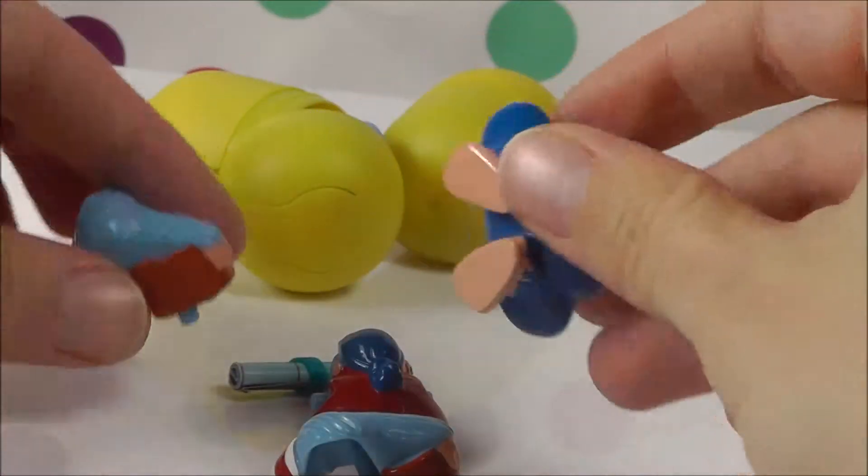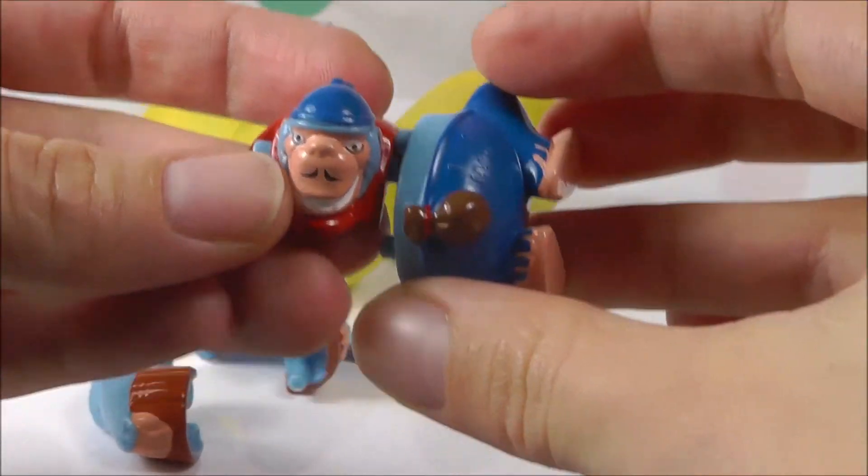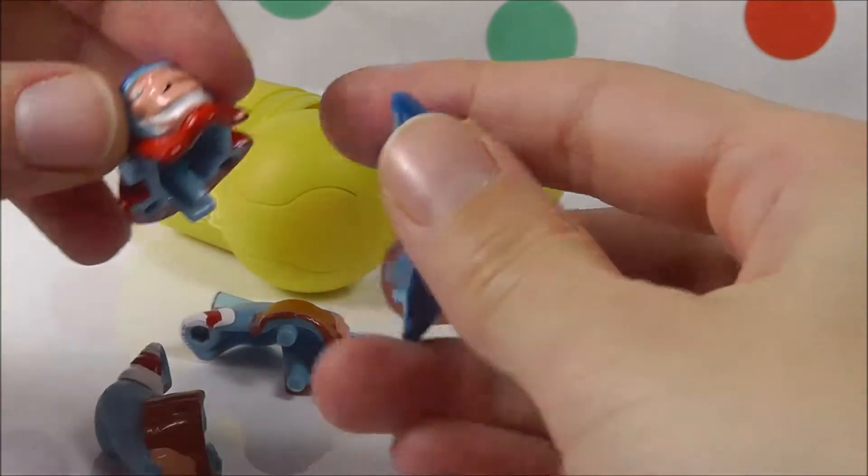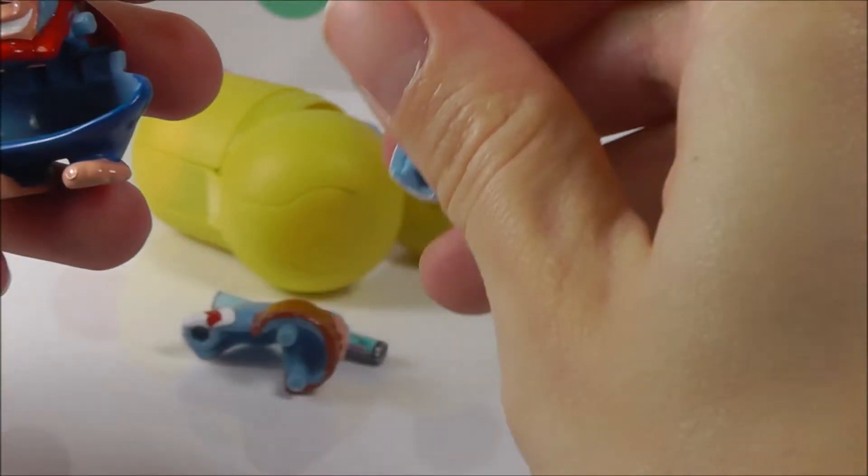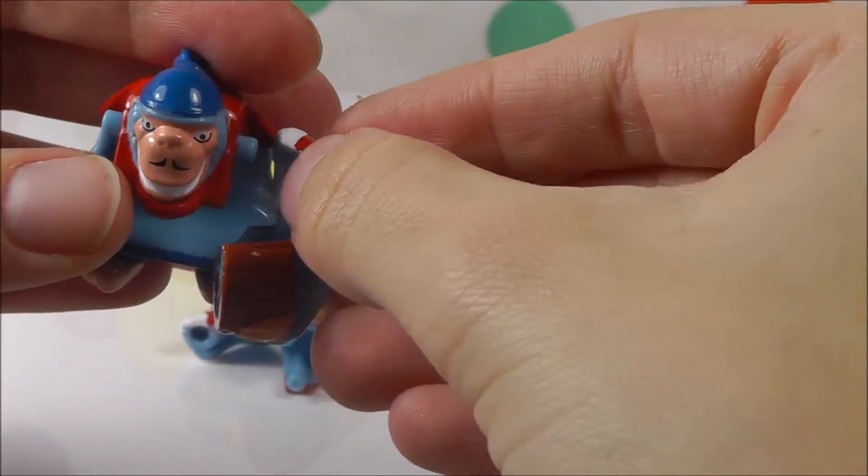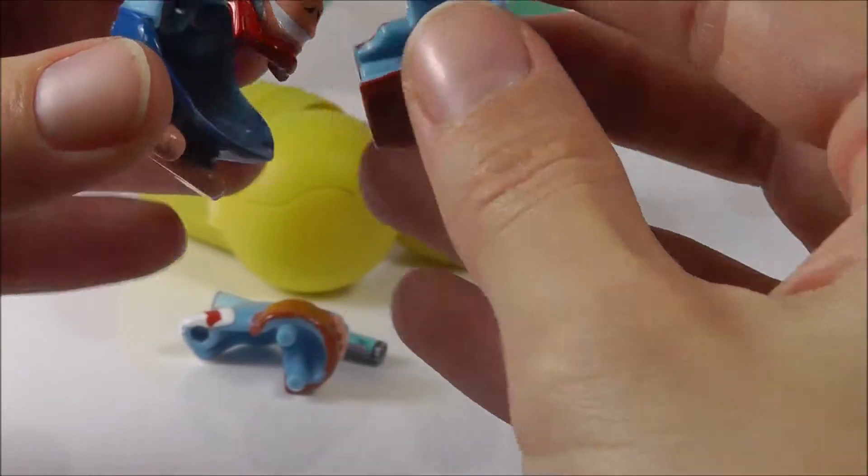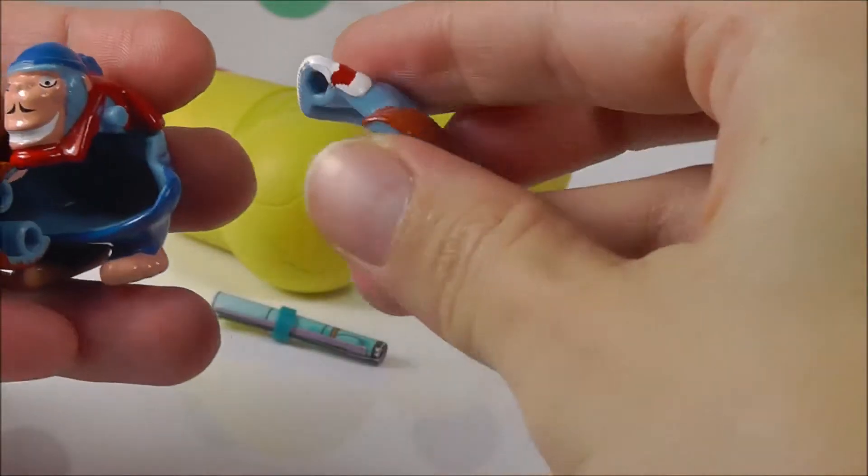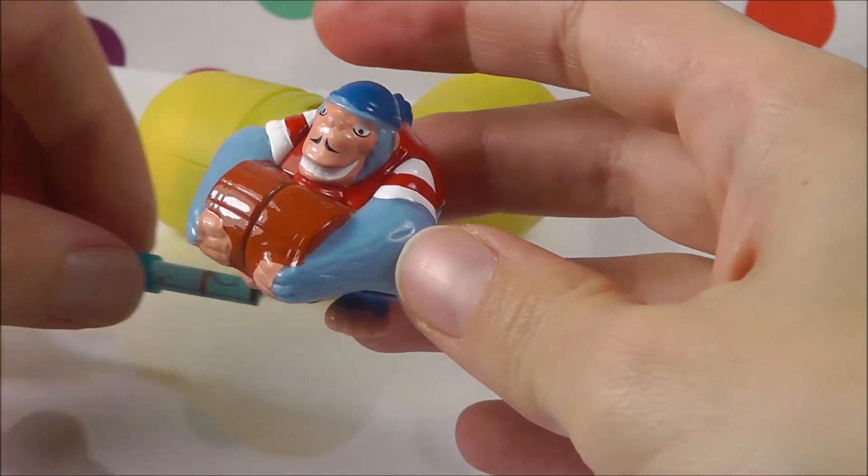We have some blue pieces here that we are going to try and put together. That looks like a pirate. Let's put this here and this one goes where? This one goes here. No, this one goes here. And another one. Here he is.